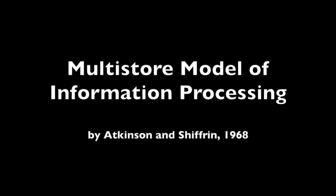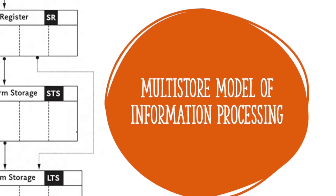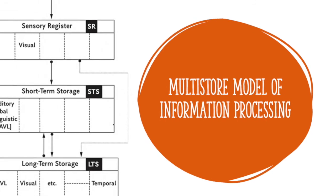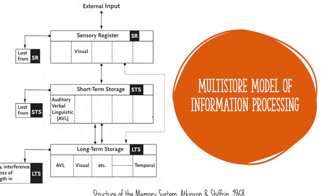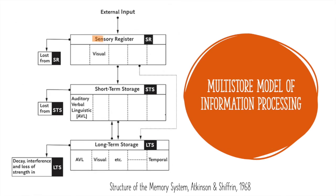Back in 1968, Atkinson and Shiffrin developed a model to explain memory and retention. They called it the multi-store model of information processing. According to this model, information enters our brain from one of the sensory registers, for example, our eyes, ears, mouth, nose, or skin.